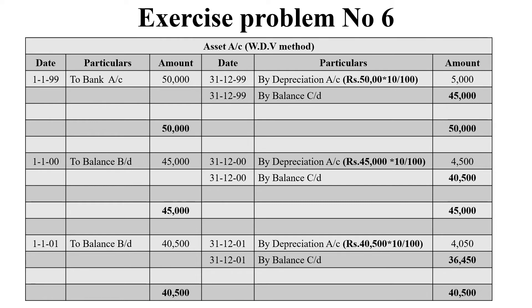The depreciation is calculated upon the 1st January 2000 asset value of 45,000, and the rate is 10%. That is 45,000 into 10 by 100, which gives 4,500. So the balancing figure is 40,500.